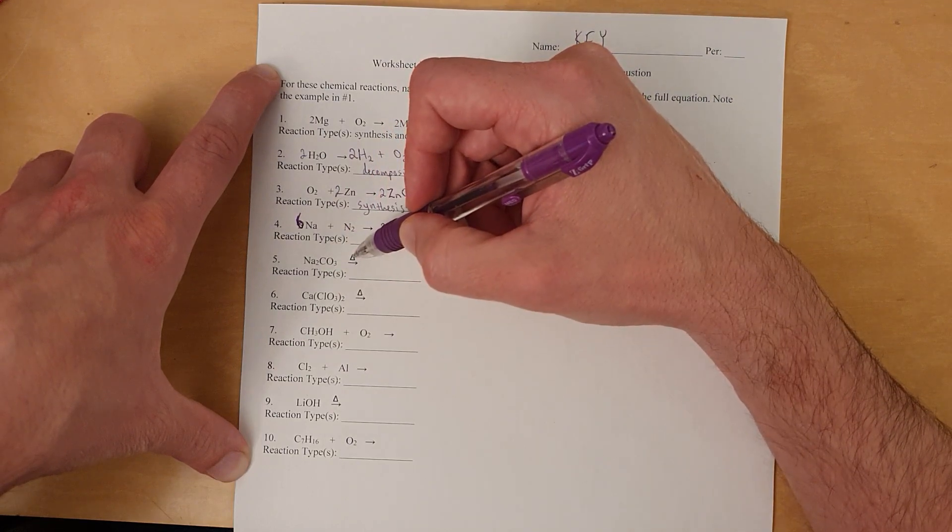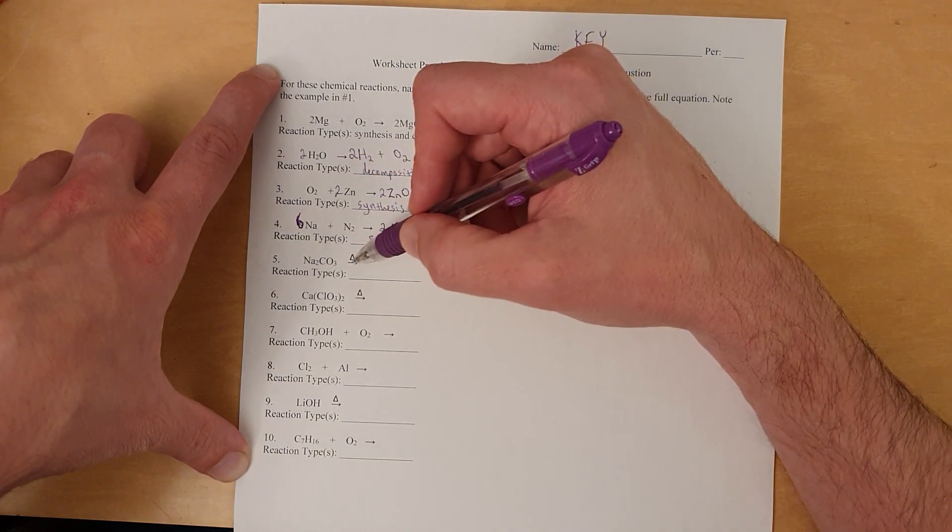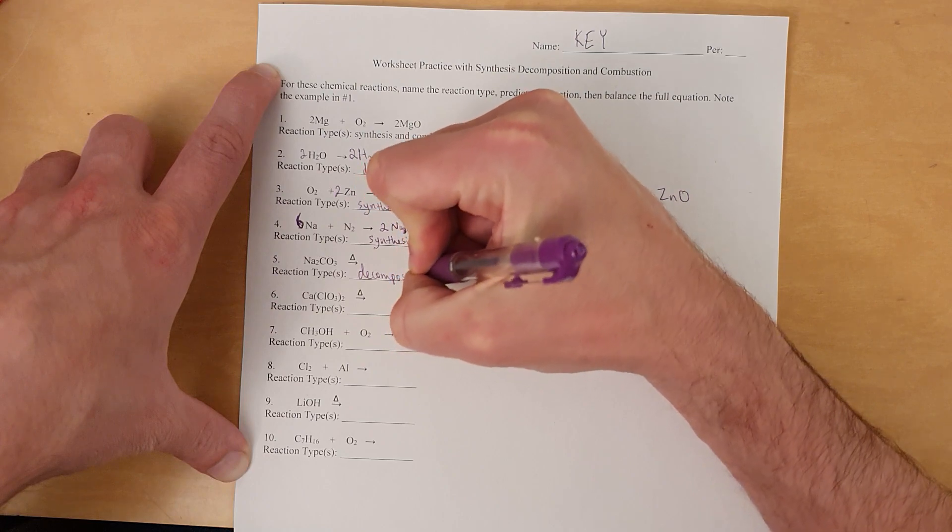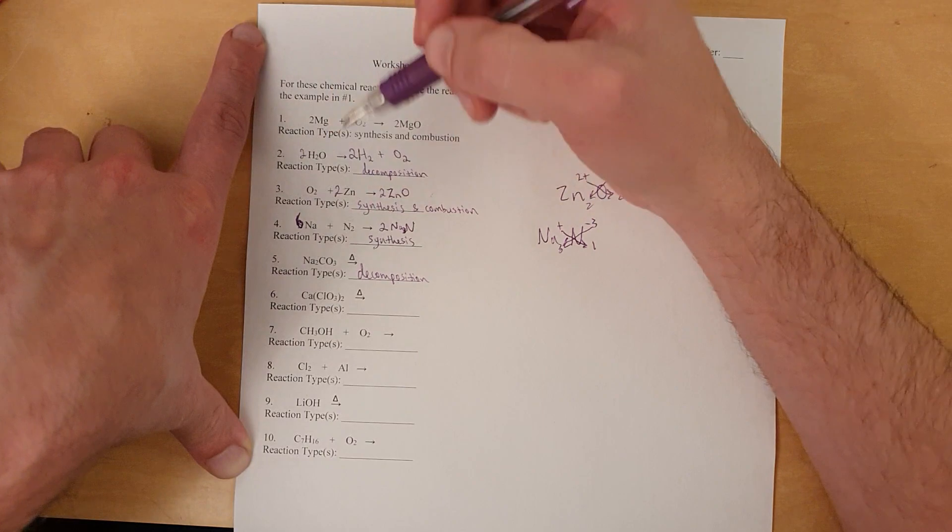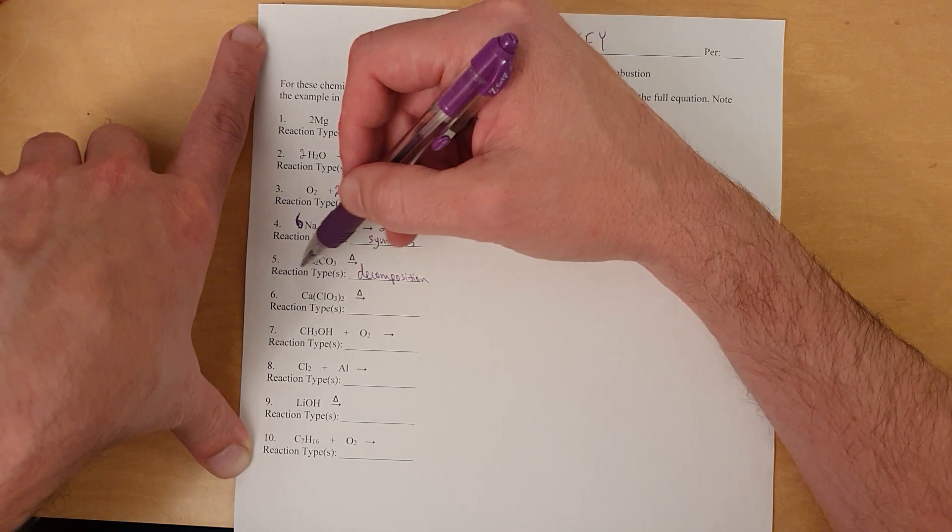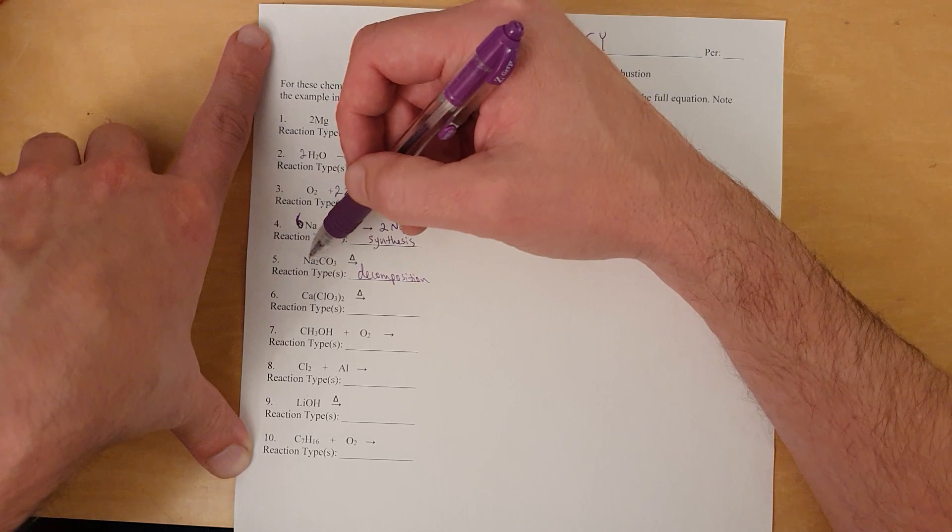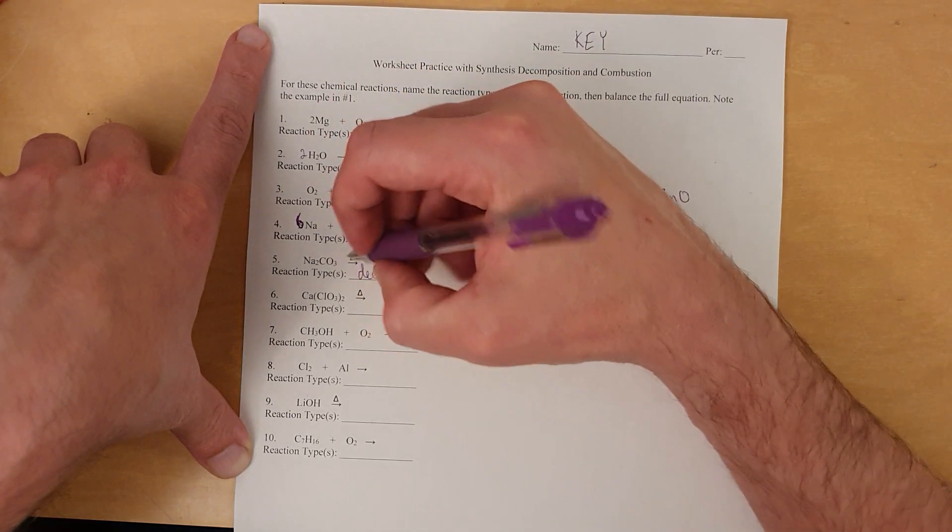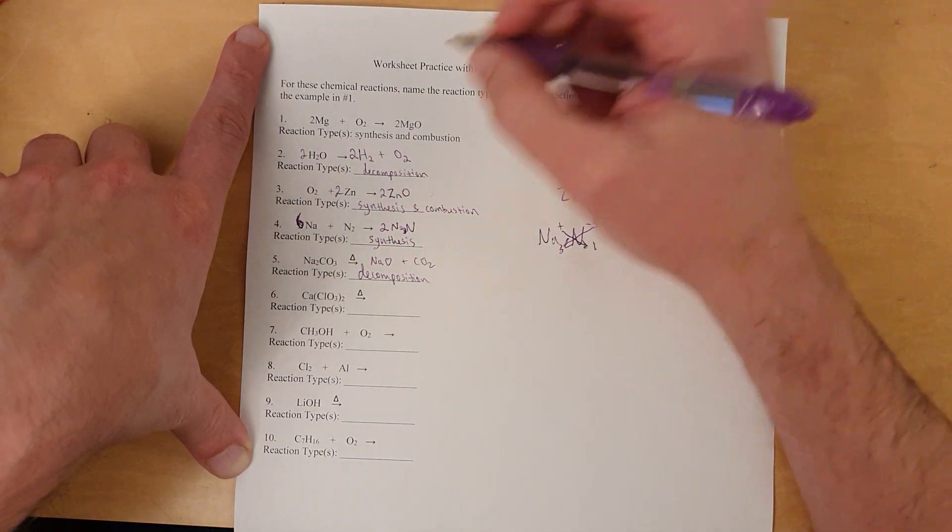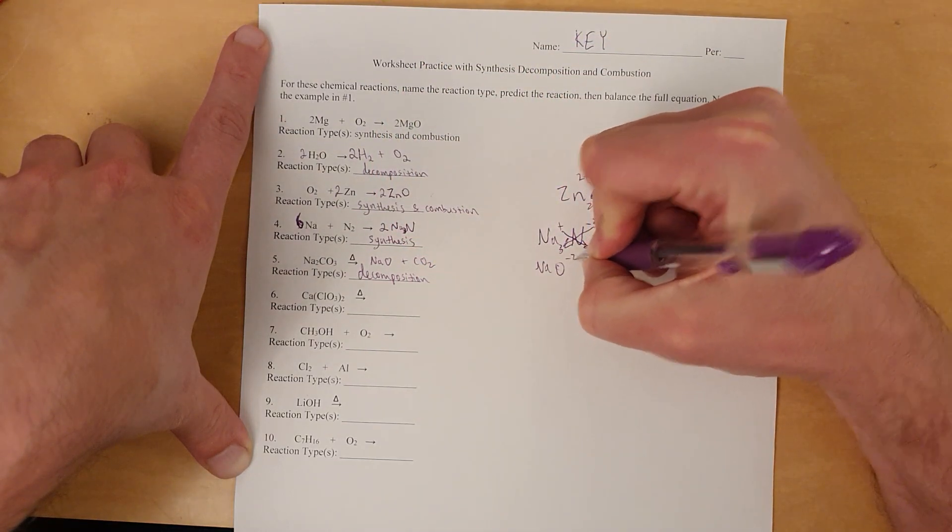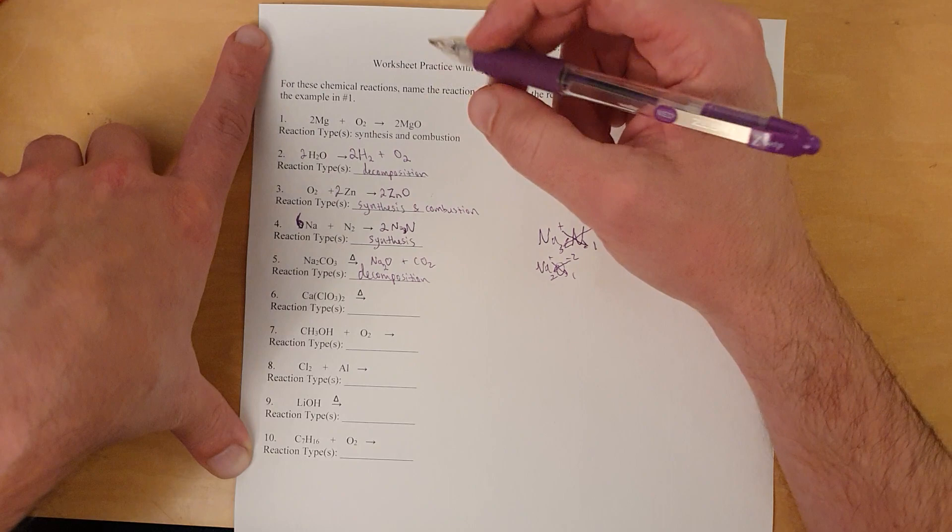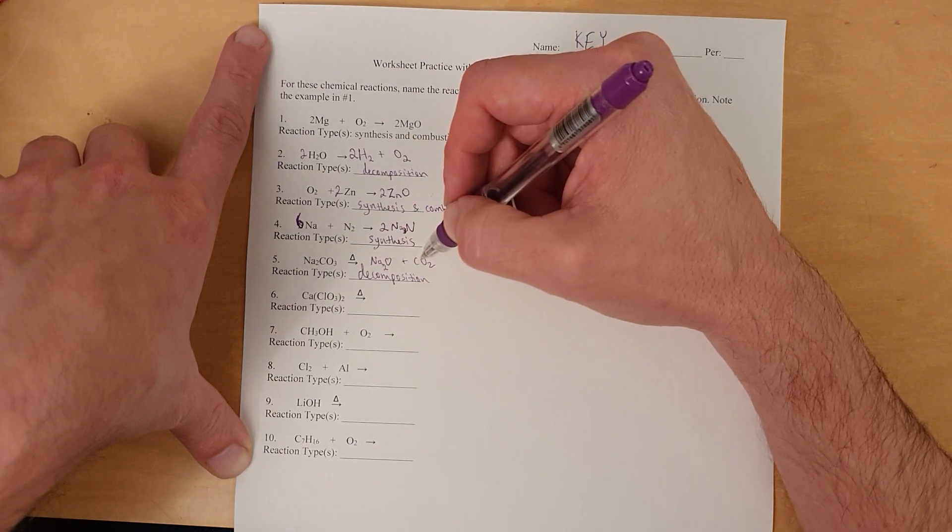Alright, next. One reactant. Forget the triangle. Not all decomposition reactions have a triangle, but this one does. So, reaction type is decomposition because there's one reactant. So, what does this make? We said it splits into elements it's made of. So, do you get sodium, carbon, and oxygen? And the answer is no. This is a special decomposition reaction. This is listed in your notes. This is a metal. This is a carbonate. Metal carbonates decompose to produce a metal oxide plus CO2 gas.